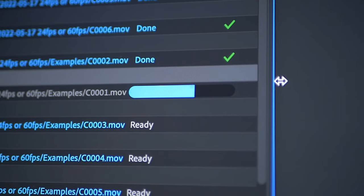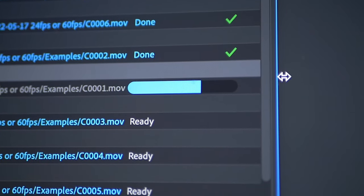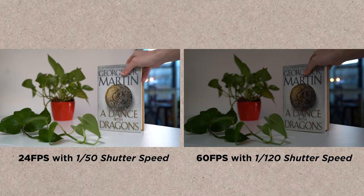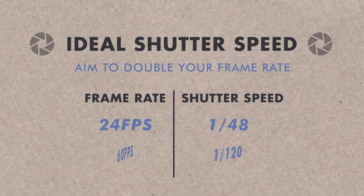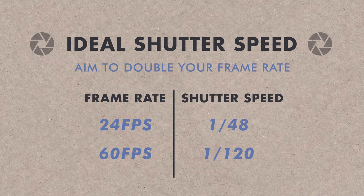Some of the cons of 60 frames per second: you're getting bigger file sizes, since you're packing a lot more frames into each minute of footage. You've also got the issue of slightly darker footage because to follow the shutter rule you need at least a 1/120 shutter speed. And finally, you might run into issues syncing your footage with audio when shooting at 60 frames per second.